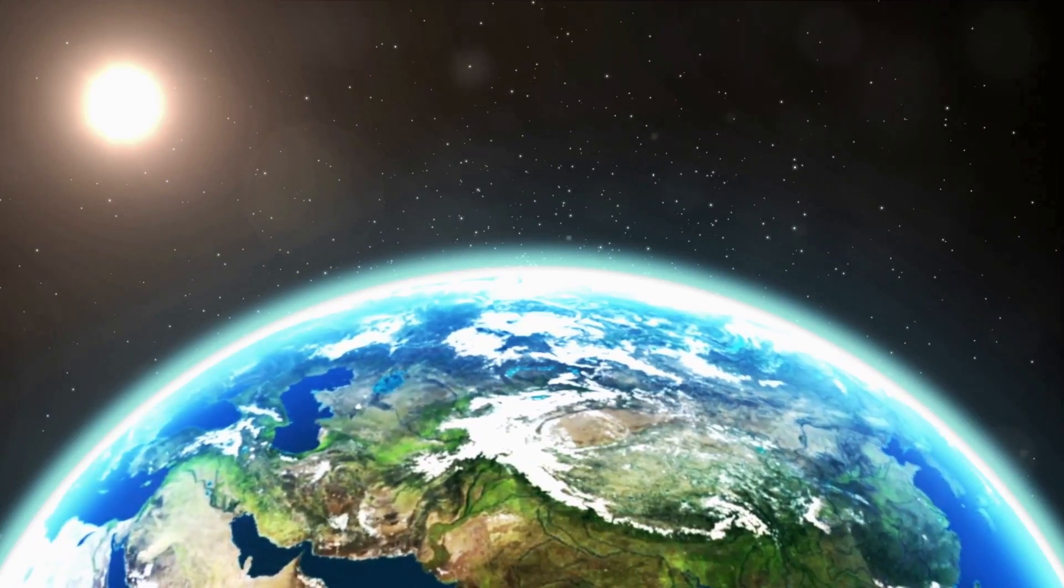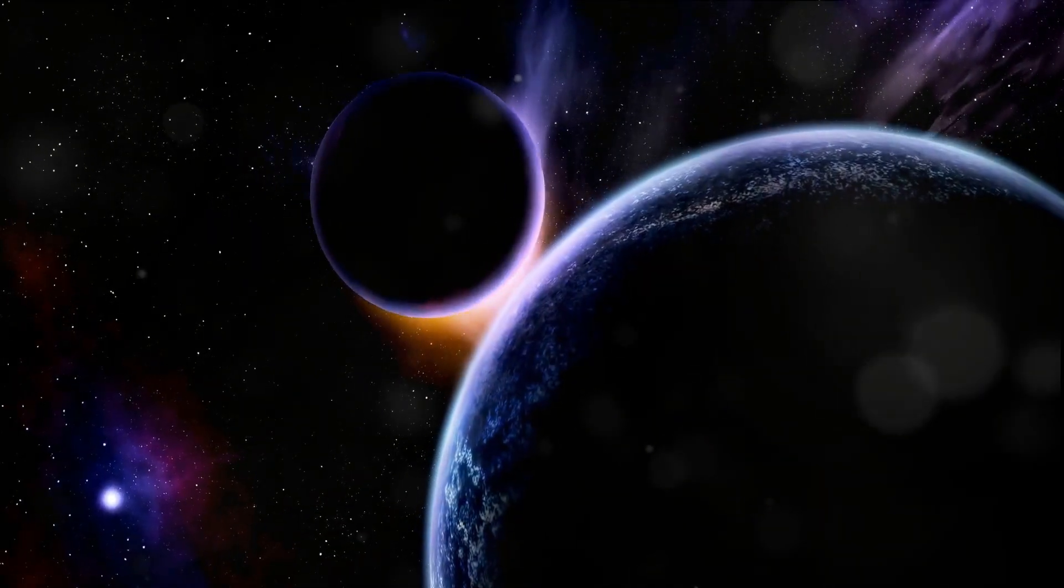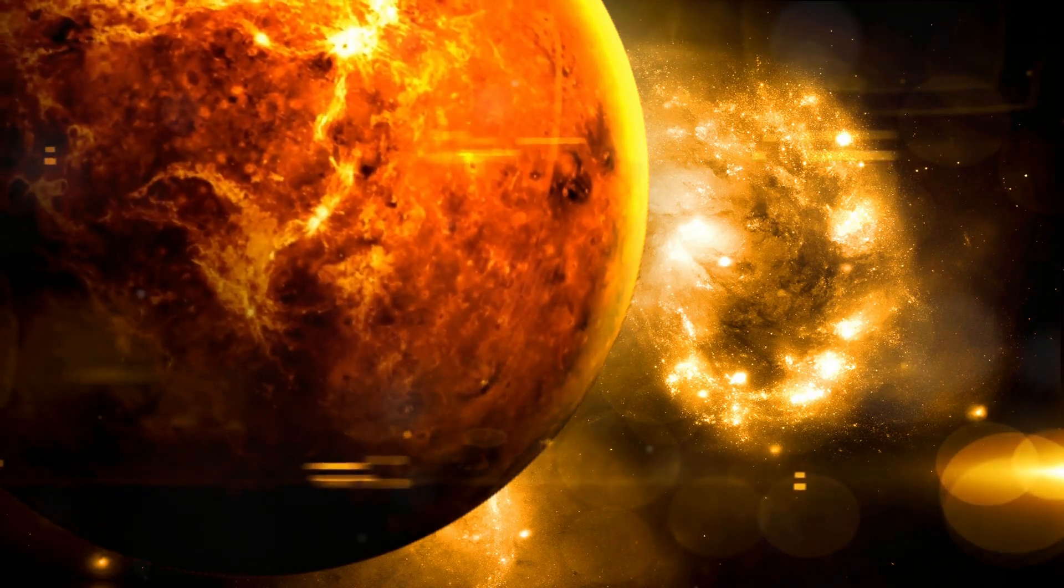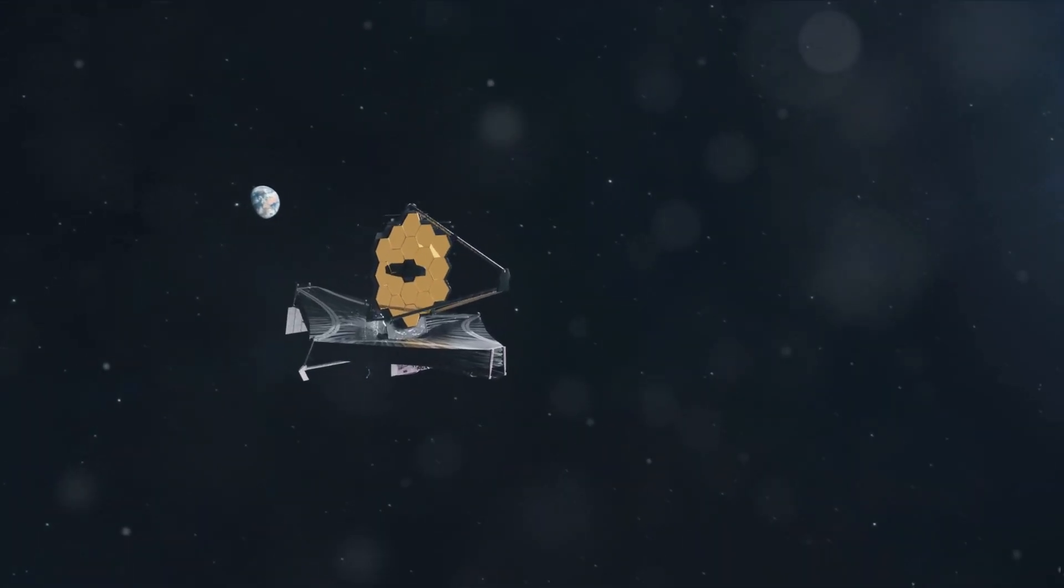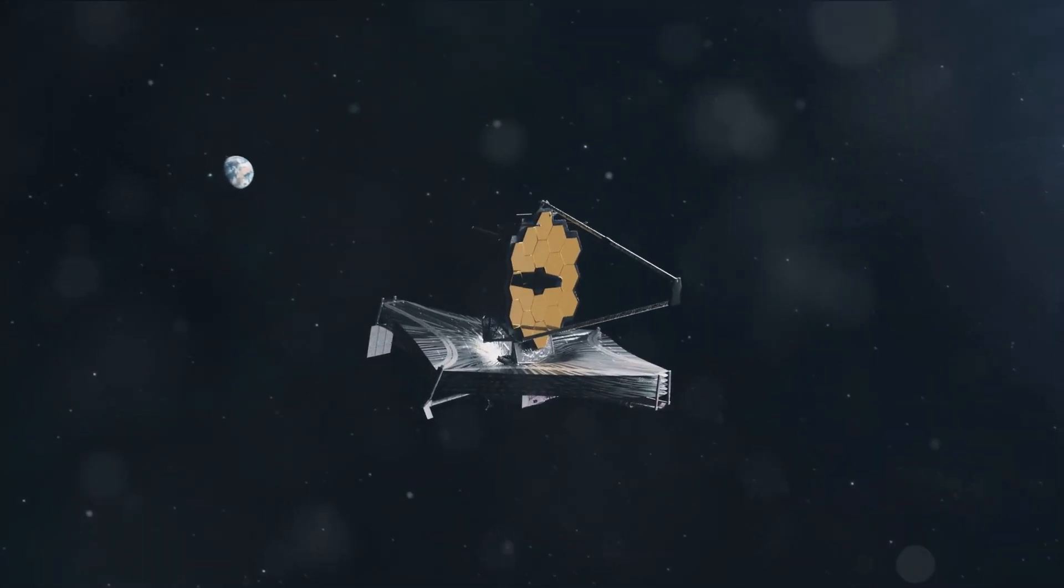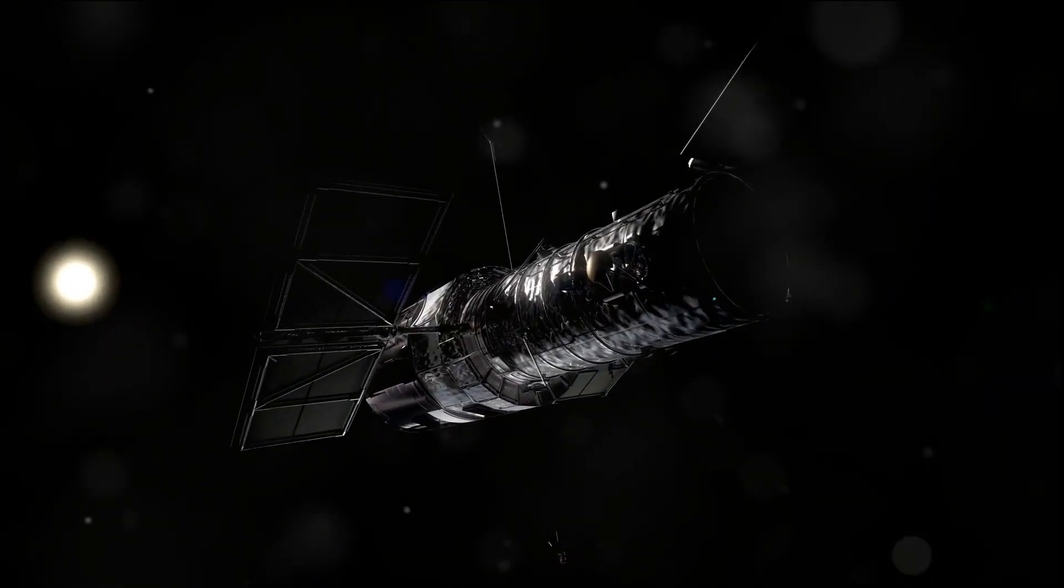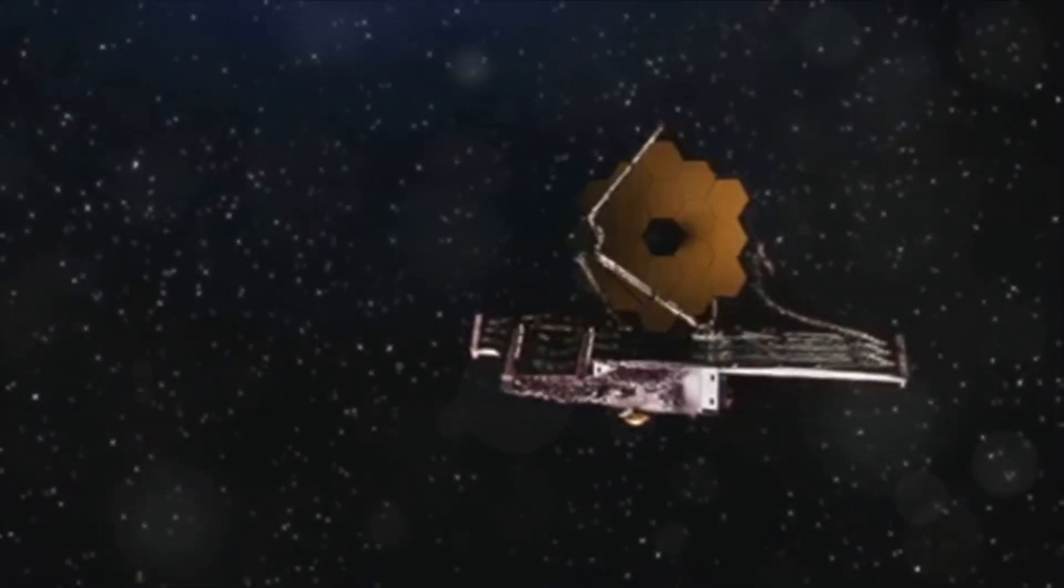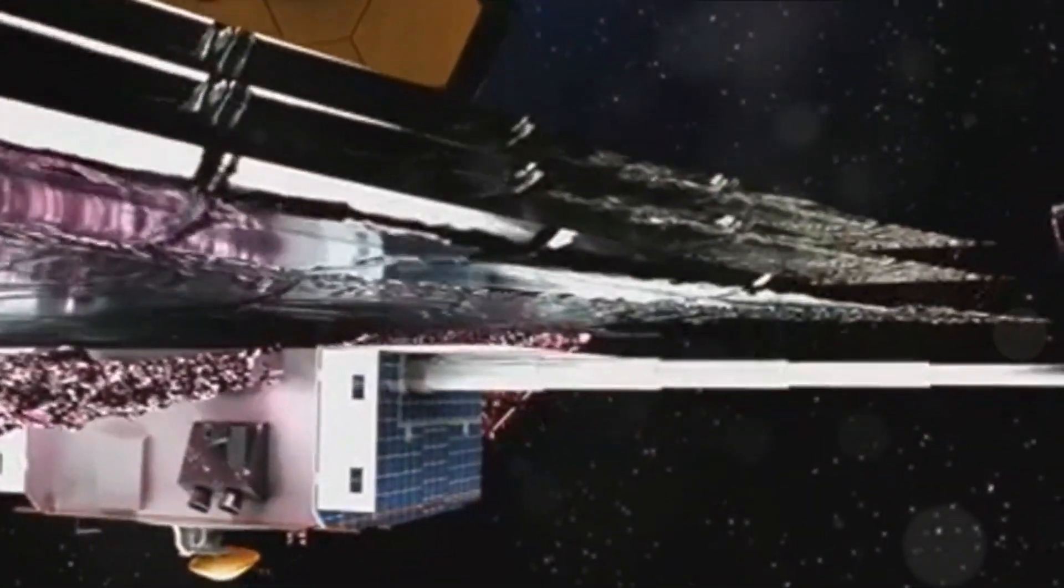But what makes TOI 1680b particularly interesting is its orbit. This super-Earth completes a full orbit around its host M dwarf star every 4.8 days. Imagine having a year that's less than a week long. This rapid orbit offers scientists a wealth of data about the planet's composition, atmosphere, and potential habitability. Furthermore, TOI 1680b has been identified as an excellent candidate for atmospheric characterization by the James Webb Space Telescope. This could potentially reveal the presence of water molecules, offering valuable insights into the atmospheres of super-Earths. The discovery and study of TOI 1680b, therefore, not only expand our knowledge of these fascinating exoplanets, but also fuel our curiosity and drive to understand the vast and diverse universe we inhabit.